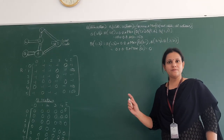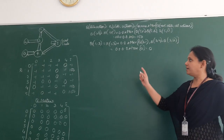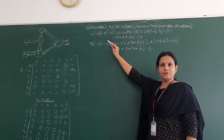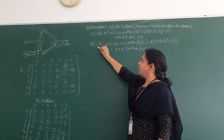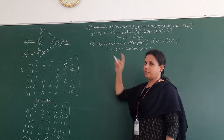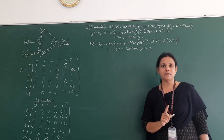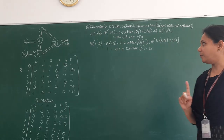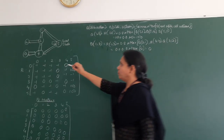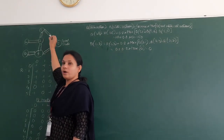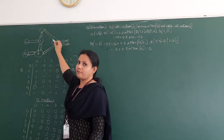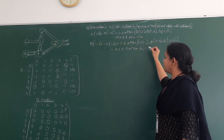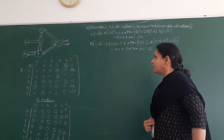Hello students. In the previous lecture, I explained this problem. We computed Q(1,5) and Q(1,3). I considered the initial state as state 1. From state 1, I told you I can go to state 3 or I can go to state 5. I got the values of 100 and 0 for this.